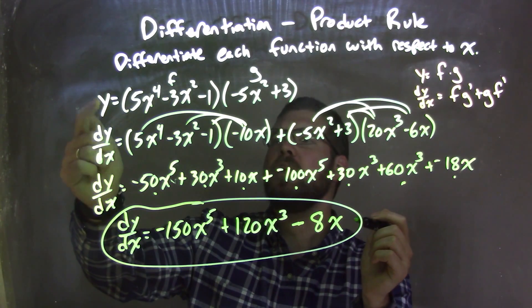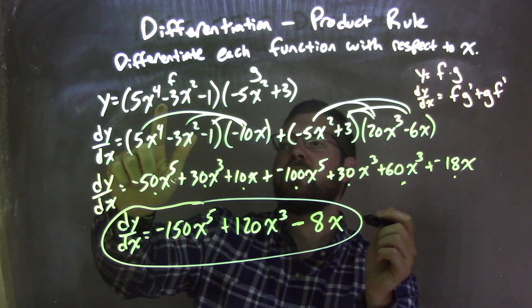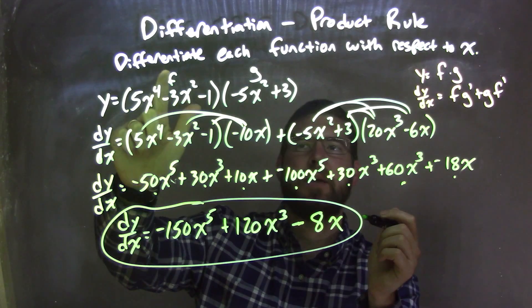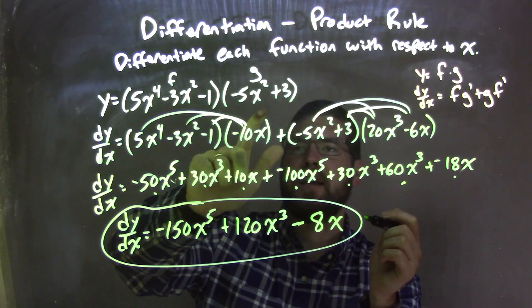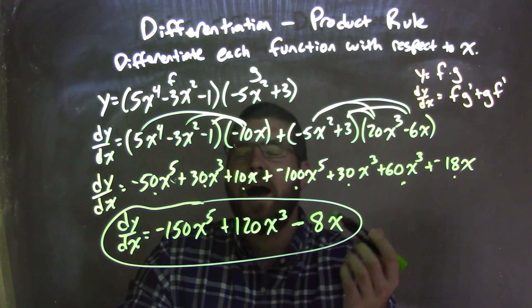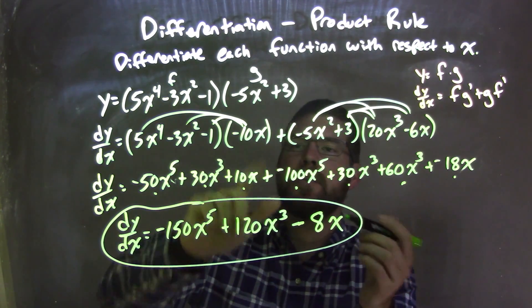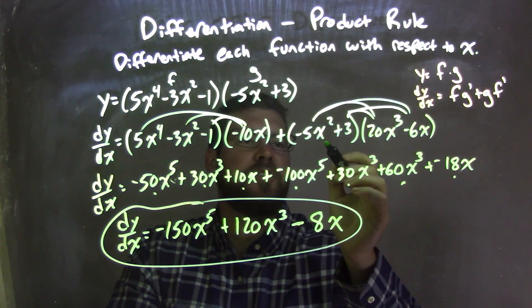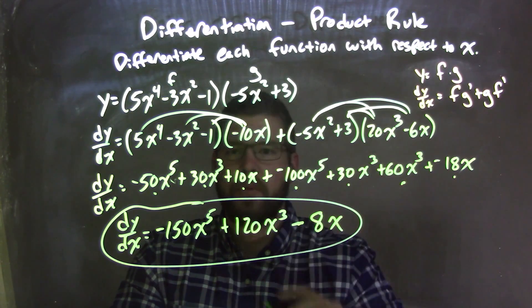So let's recap. We're given our function y equals, in parentheses, 5x to the 4th minus 3x squared minus 1, which I labeled as f, times g, which is negative 5x squared plus 3. I then applied the product rule, which is f times g prime plus g times f prime.